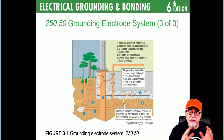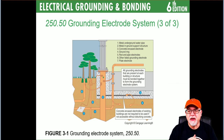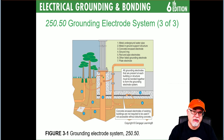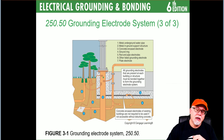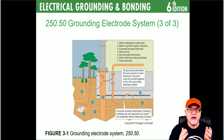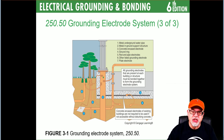All of these electrode types have to be tied together. Commonly, if you had a water pipe ground, the five-foot point of entry is where you can interconnect all the different electrodes. You cannot use rebar under the 2020 National Electrical Code as an interconnection point for other electrodes — that was made very clear in the 2020 edition.